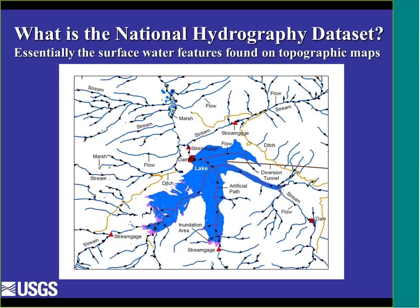So what is the National Hydrography Dataset? It's essentially the surface water features found on topographic maps. This is surface water — it doesn't have groundwater. The closest thing we have to groundwater, we do have wells and springs, but we don't have aquifers or underground information like that. Streams are shown in blue. You can see the lakes, of course. Other conveyances for carrying water on the surface, such as canals and ditches, are shown. Certain water infrastructure is in there, such as diversion tunnels, dams, and stream gauges that USGS monitors — all shown together as a collection of surface water features.